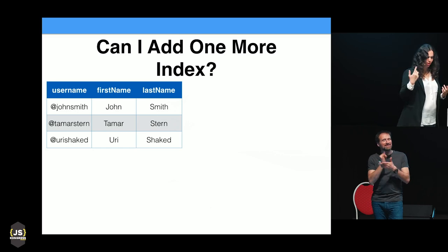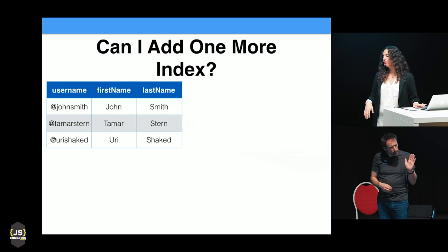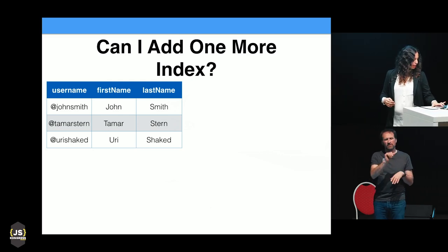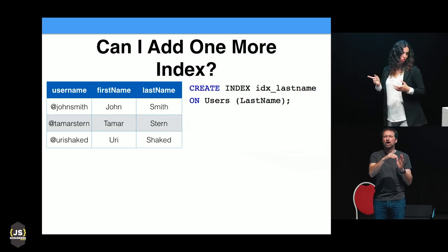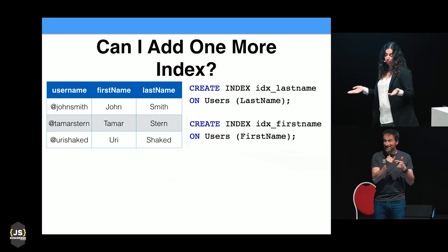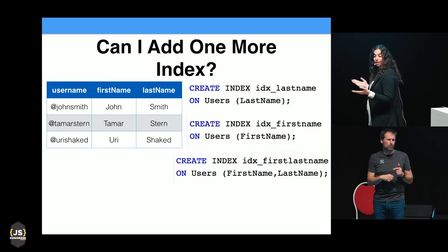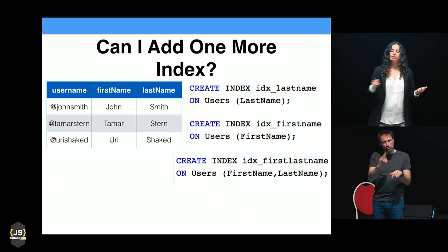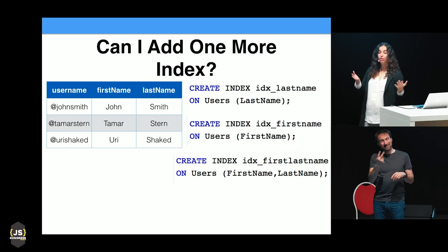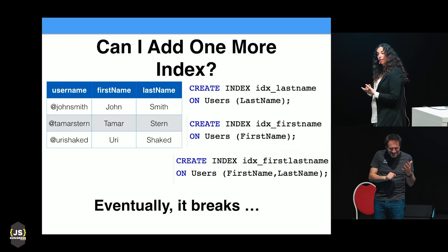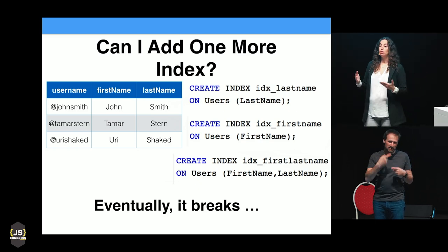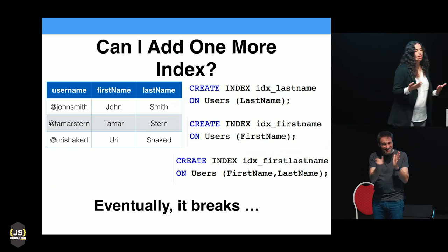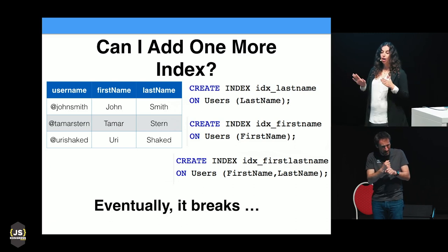Can I just add one more index? Here's a small table: username, first name, last name. I'll add one index on last name — cool. Another on first name — also cool. A combined index on first name and last name. Then a fourth index on two other columns, and a fifth on everything. Eventually this breaks, because when you have too many indexes, everything your database does is update indexes. Optimizing one model to fit everything will never work.